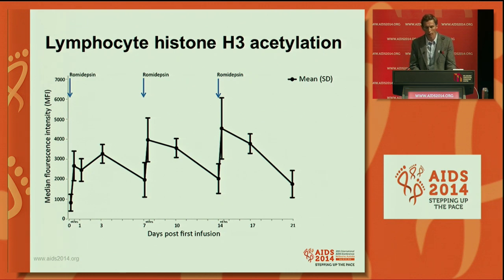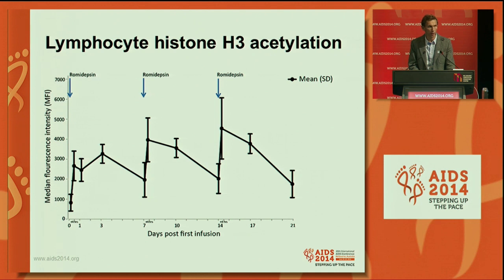Histone H3 acetylation is a direct pharmacodynamic measure of the effect of romidepsin in T lymphocytes. As indicated by the blue arrows marking each dose, there is a very quick increase in the level of acetylation in the mean of the six patients. We have a measurement time point approximately half an hour to one hour after each infusion, and with all three dosings there are significant increases at this time point, showing a very nice cyclic picture corresponding to the timing of infusions.